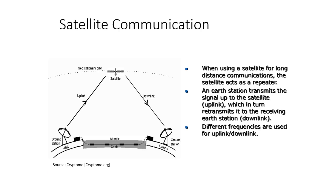In satellite communication, when using a satellite for long-distance communication, the satellite acts as a repeater. Earth stations transmit the signal up to the satellite — that is the uplink. The satellite then retransmits it to the receiving station — that is the downlink. Different frequencies are used for uplink and downlink. The signal is transmitted from the ground station to the satellite in uplink fashion and from the satellite to the ground station in downlink fashion.